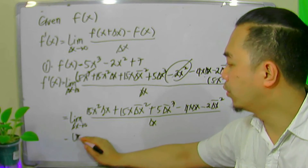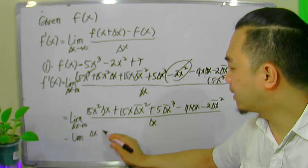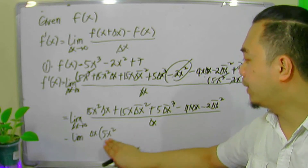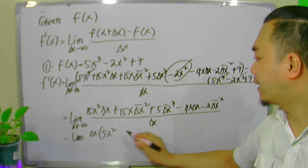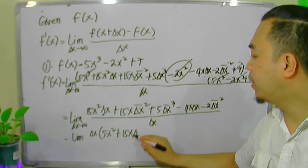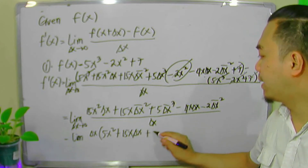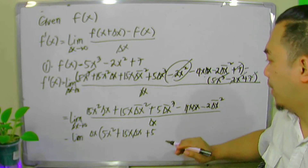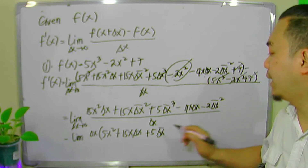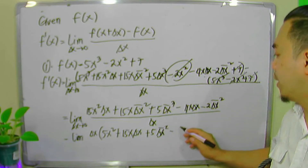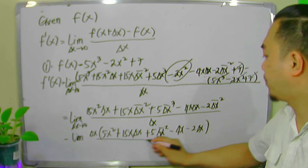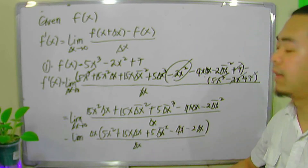We notice that each term in the numerator has delta x, so we can factor out delta x. So we have delta x times the quantity 15x squared plus 15x delta x plus 5 delta x squared minus 4x minus 2 delta x, all over delta x.